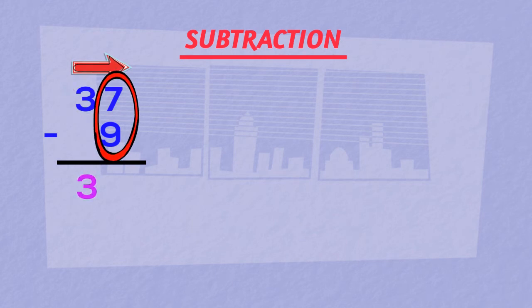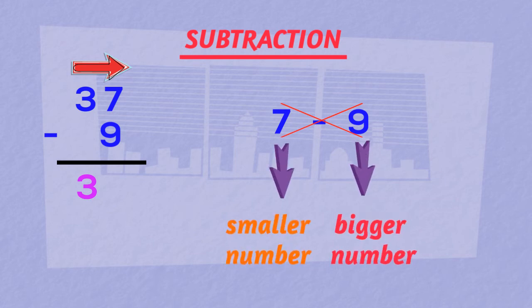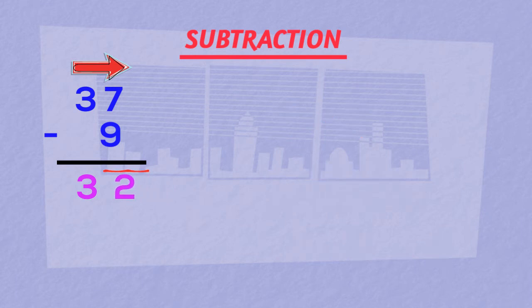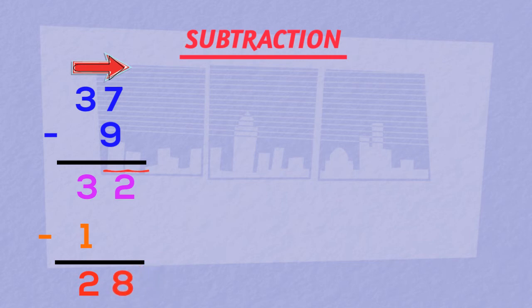7 minus 9 is not possible as 7 is smaller than 9. So we will do reverse subtraction, that is 9 minus 7, and write the answer 2 with a bar on it. Now the number before the bar gets subtracted by 1. So 3 minus 1 is 2 and we have to write the complement of the bar number. Here complement of 2 is 8. We get our answer 28.